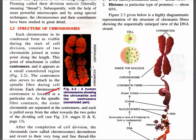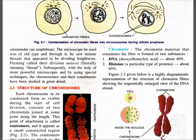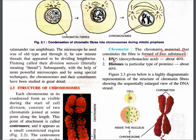The chromatid material that constitutes the fiber is formed of two substances: DNA and histones. DNA stands for deoxyribonucleic acid — about 40% — and histones make up about 60%.